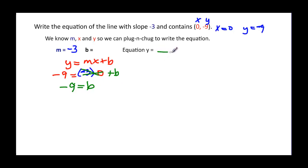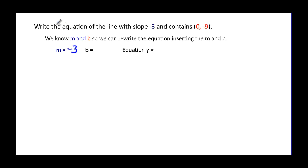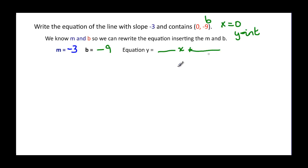Now we write our equation as y equals some slope times x plus some b. We know our slope is negative three and our b is negative nine, so y is equal to negative three x minus nine. Looking at the equation again, when x is equal to zero we have the y-intercept. If we recognized that the point was (0, -9), that immediately tells us b is negative nine, so we can plug in m and b directly — just a second, faster way to do it.